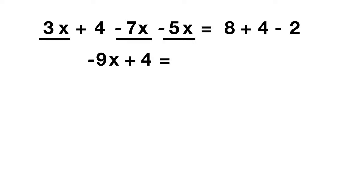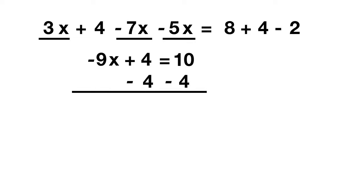On the other side of the equal sign, we combine all terms: 8 plus 4 is 12, and then minus 2, that's 10. Now we solve like a regular equation. We start by getting rid of the plus 4 by subtracting 4 from each side. The plus 4 and minus 4 cancel out, leaving negative 9x. On the other side, 10 minus 4 gives you 6.